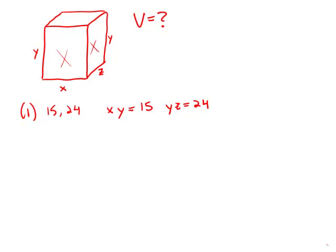From this, we'd like to figure out what the volume is. The trouble is there are many different combinations. We know y has to be the same, so we could have x equals 5, y equals 3, z equals 8, and that would give us one volume. Or we could have y equals 1, x equals 15, z equals 24, and that would give us another volume.